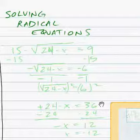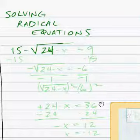And let's go with this one. 15 minus the square root of 24 minus x equals, let's say, 9.